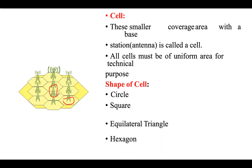So what should be the shape of this cell? The cell can either be of circular shape, or it could be a square, a triangle, or a hexagon. We need to decide on what should be the exact shape of a cell.